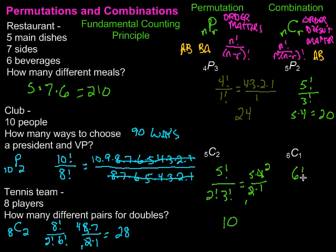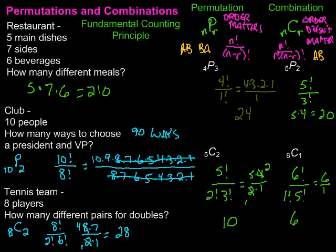For the last one, 6C1: 6 factorial over 1 factorial times 5 factorial. Everything from 5 down to 1 cancels out, leaving just 6 on top. And 1 factorial is just 1, so 6 over 1 gives us 6.